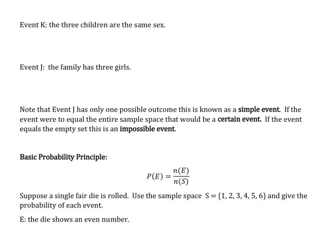Given that same set, event K, the three children are the same sex. Well, there was only two options for that. So if we have event K, our options being the same sex would be girl, girl, girl, or boy, boy, boy.